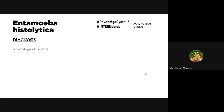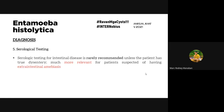The E. histolytica II test is an antigen test that detects E. histolytica adhesin — its main purpose is to differentiate E. histolytica, E. dispar, and E. moshkovskii from the rest of the Entamoeba species. Also, serological tests can detect SREHP (serine-rich E. histolytica protein) and galactose-specific adhesin, which are specific antigens for E. histolytica.